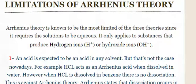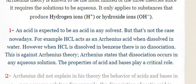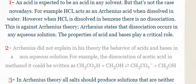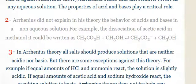Limitation number one: an acid is expected to behave as an acid in any solvent, but that's not the case. For example, HCl acts as an Arrhenius acid when dissolved in water; however, when HCl is dissolved in benzene, there is no dissociation. This is against Arrhenius theory, which states that dissociation occurs in any aqueous solution.